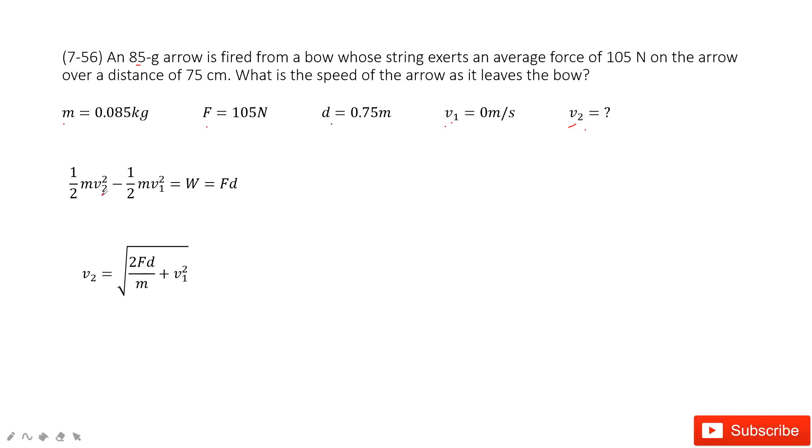So the final kinetic energy minus initial kinetic energy equals the work done on this object, W. This one is force times the distance, cosine theta. So Fd. In this one, you can see v2.